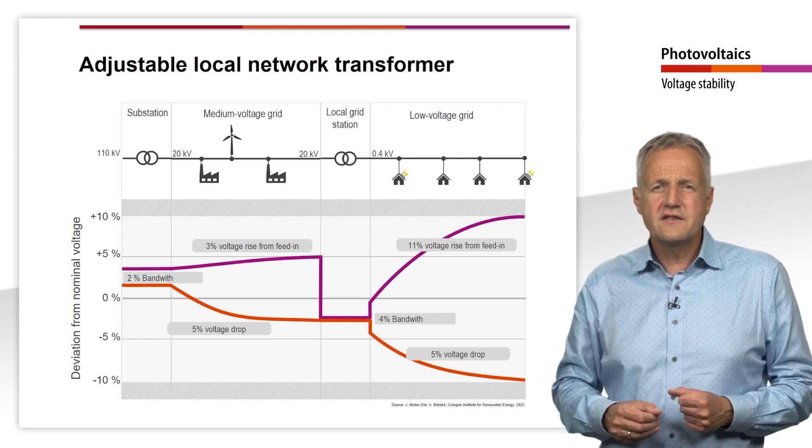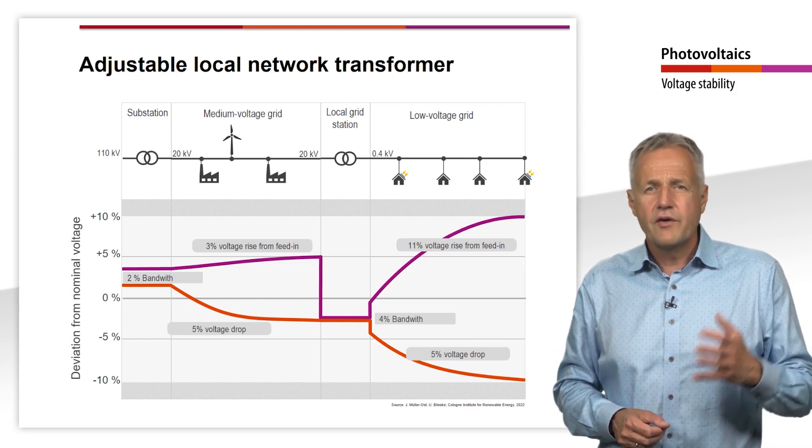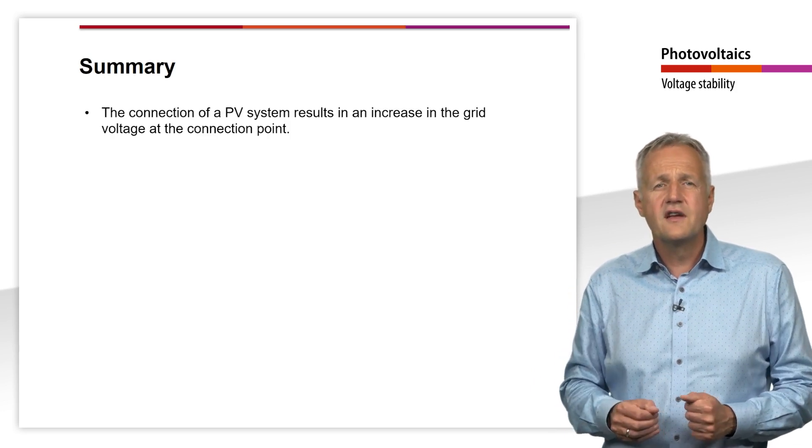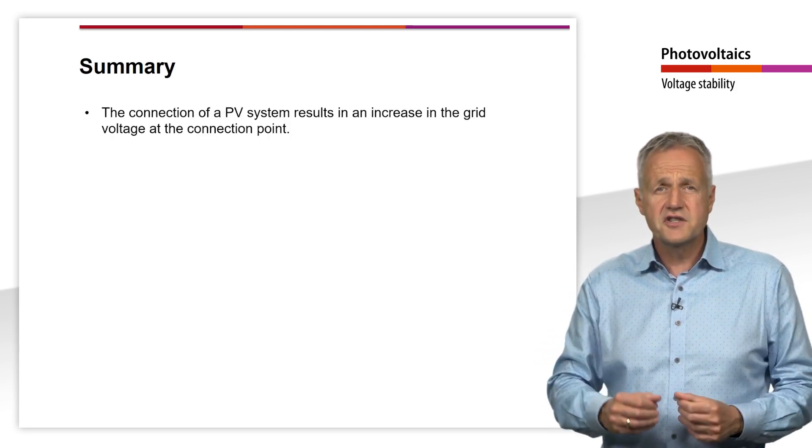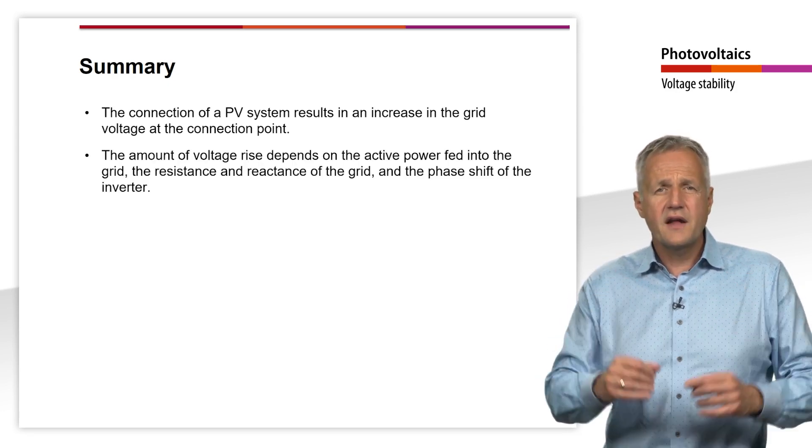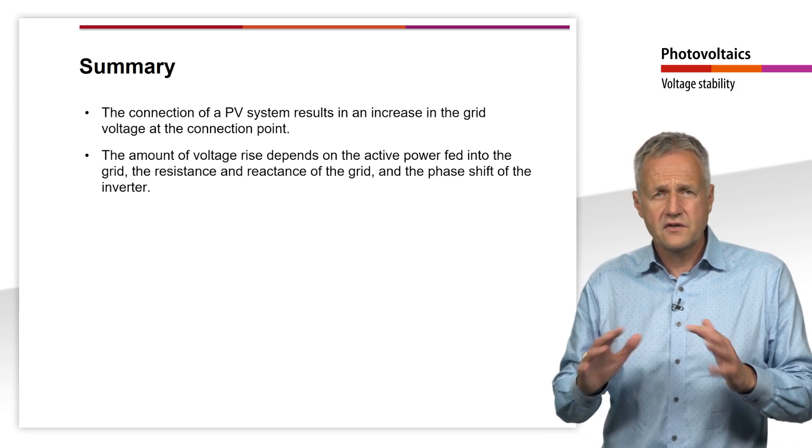Let's summarize this teaching unit. We have learned that the connection of a PV system results in an increase in the grid voltage at the connection point.